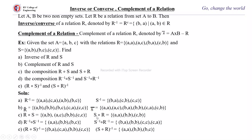For S∘R, start from S and go to R: (a,b) with (b,a) gives (a,a); (b,c) with (c,b) gives (b,b); (c,c) with (c,b) gives (c,b). So S∘R={(a,a),(b,b),(c,b)}.